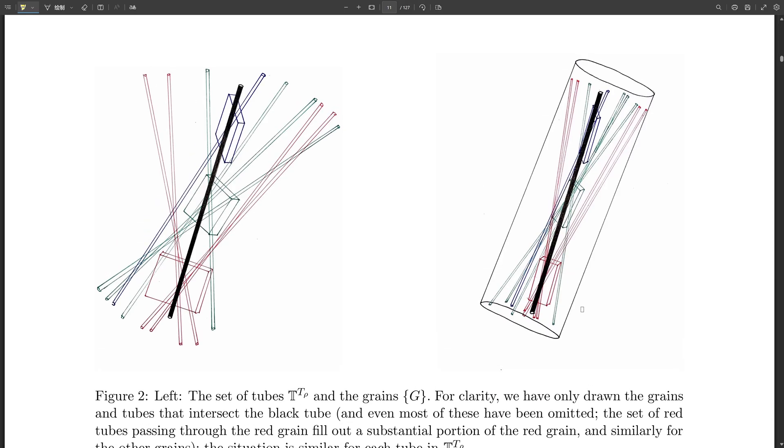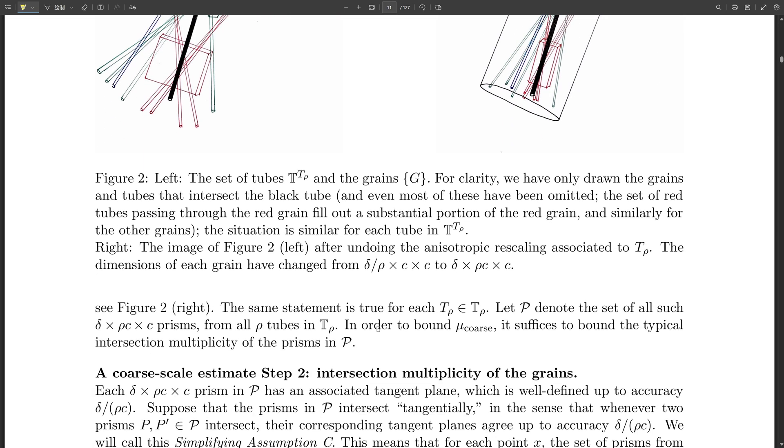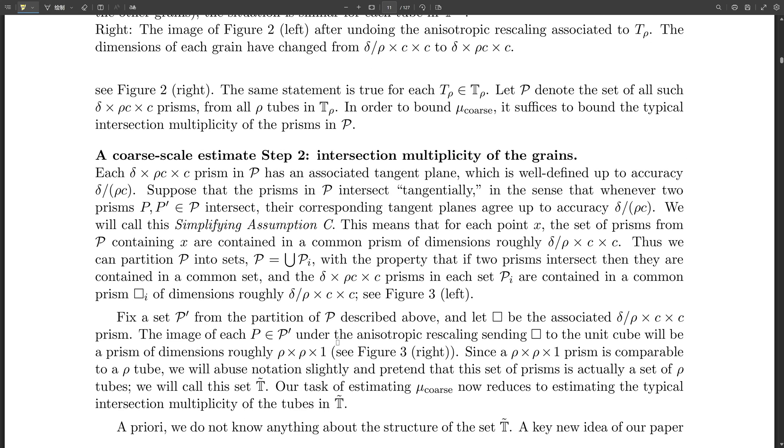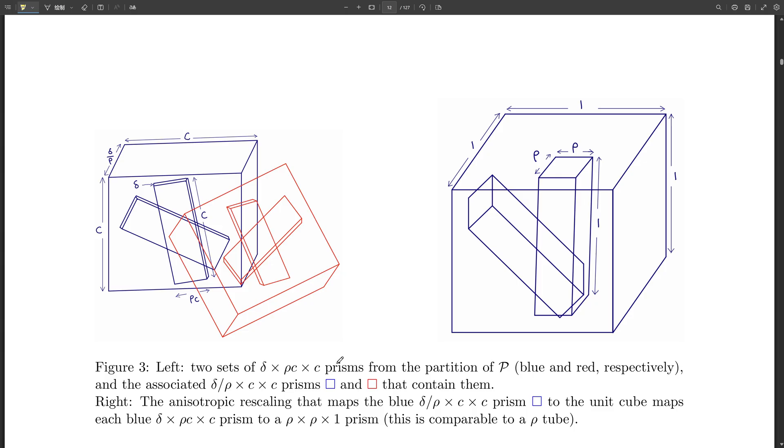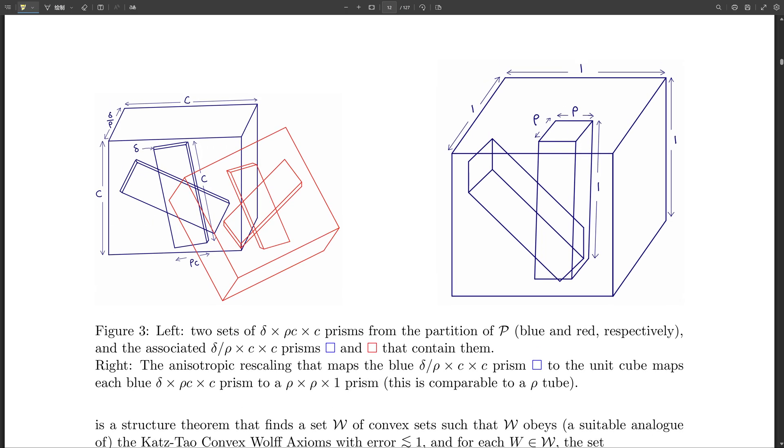So they're building a ladder rung by rung and using those moves to reach higher and higher levels of complexity. That's a perfect way to put it. And those rungs are what they call assertions D and E in the paper. They're like checkpoints along the way, establishing key relationships between the volume of the tubes, their clustering, and the different scales they're analyzing. Okay. So we've got this non-clustering property, multi-scale analysis, grains decomposition, strategic moves, and assertions D and E. My head is spinning. Is there anything else I need to know to even wrap my mind around this proof? Well, there's one more crucial piece. Remember how we talked about the tubes needing to be spread out enough for their analysis to work? Well, they capture that with a condition they call broadness.